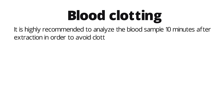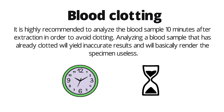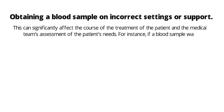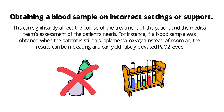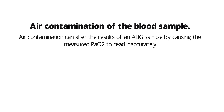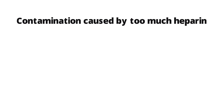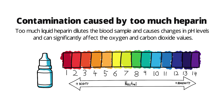Third, blood clotting — it is highly recommended to analyze the blood sample within 10 minutes after extraction to avoid clotting. Analyzing a clotted sample will yield inaccurate results and render the specimen useless. Fourth, obtaining a blood sample on incorrect settings — for instance, if a blood sample is obtained while the patient is still on supplemental oxygen instead of room air, the results can be misleading and yield falsely elevated PaO2 levels. Fifth, air contamination of the blood sample, which can alter results by causing the measured PaO2 to read inaccurately. Sixth, too much liquid heparin, which dilutes the blood sample and causes changes in pH, oxygen, and carbon dioxide values.